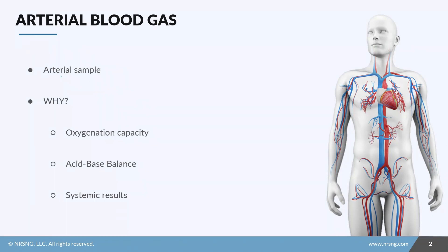An arterial blood gas is obtained from an artery. That could be a direct stick into the radial artery, the brachial artery, or even the femoral artery. Your patient might even have an indwelling arterial line connected to a monitor for blood pressure monitoring. It's important that you know your state and facility policies.